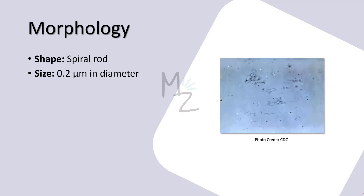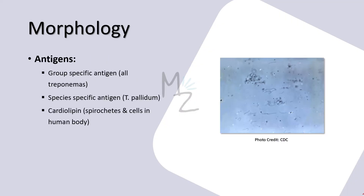Treponema pallidum is a spiral rod, 0.2 micrometres in diameter. Spirochetes move using endoflagella, also called axial filaments, which are located within the periplasmic space — the space between membranes. This flagella causes the entire cell to rotate and undulate in a unique twisting corkscrew-like motion, which causes them to move forward. There are group-specific antigens found in all treponemas, a species-specific antigen found in Treponema pallidum, and cardiolipin, which is a lipid antigen found in spirochetes and also in human cells.